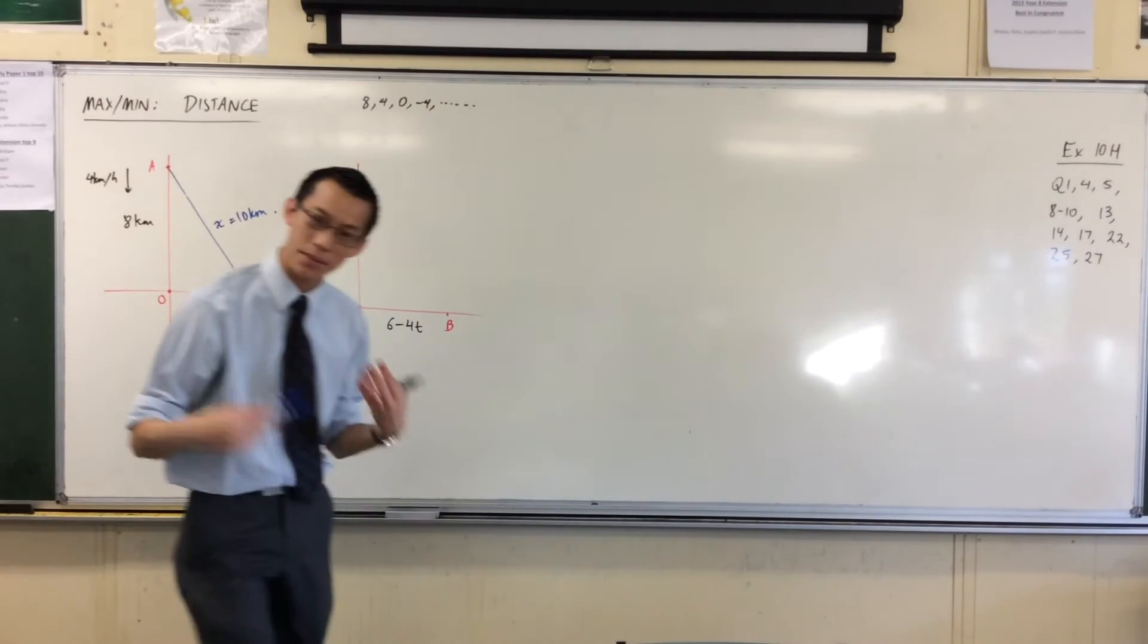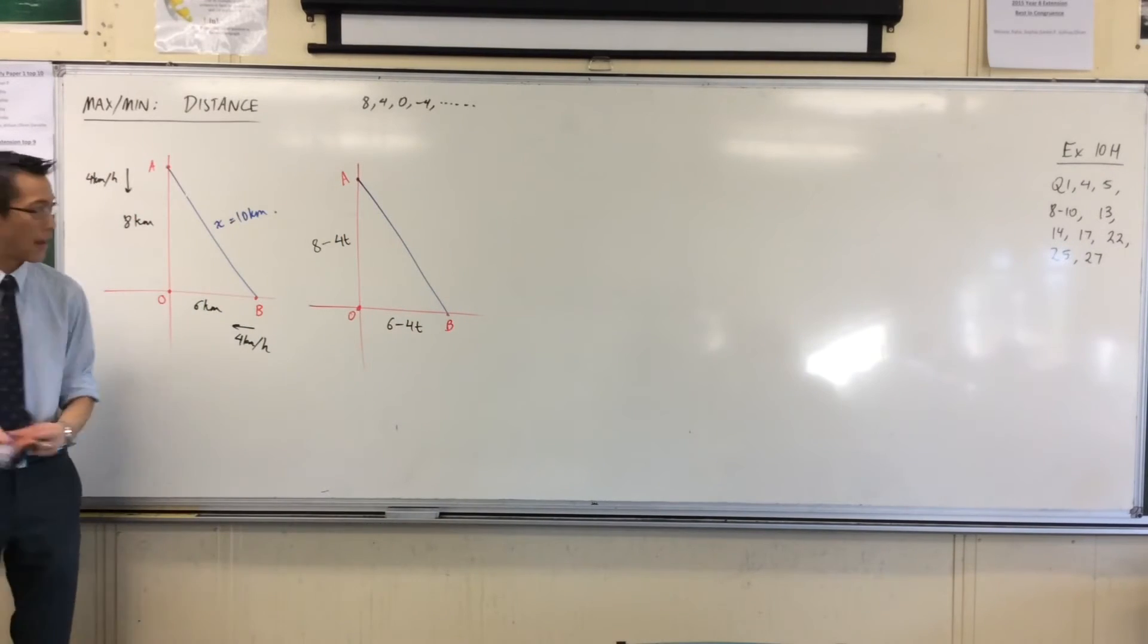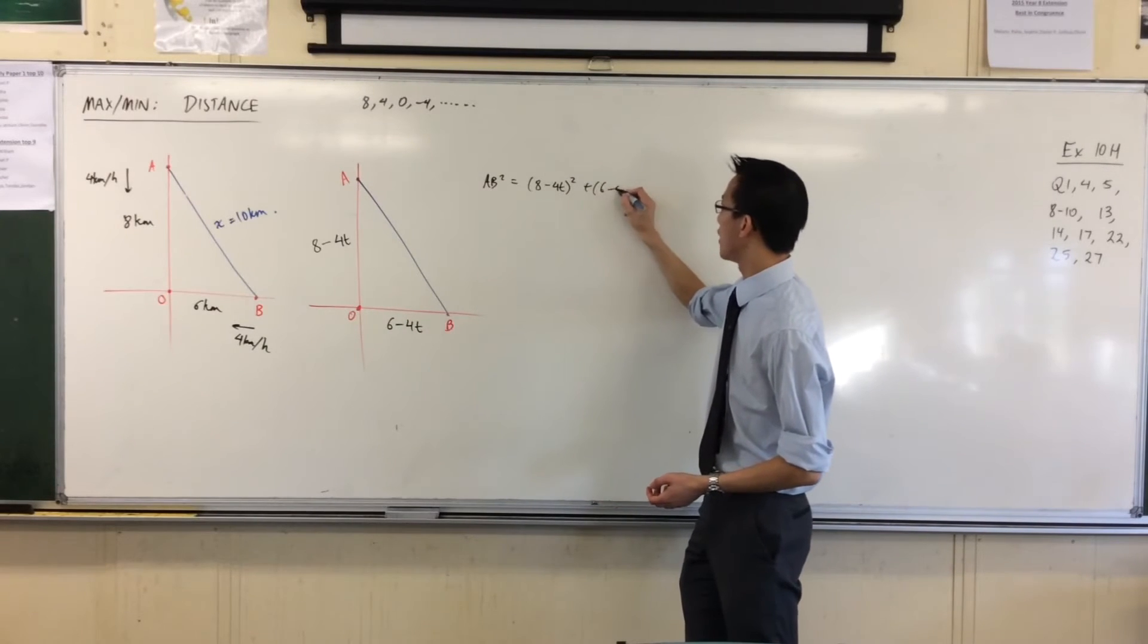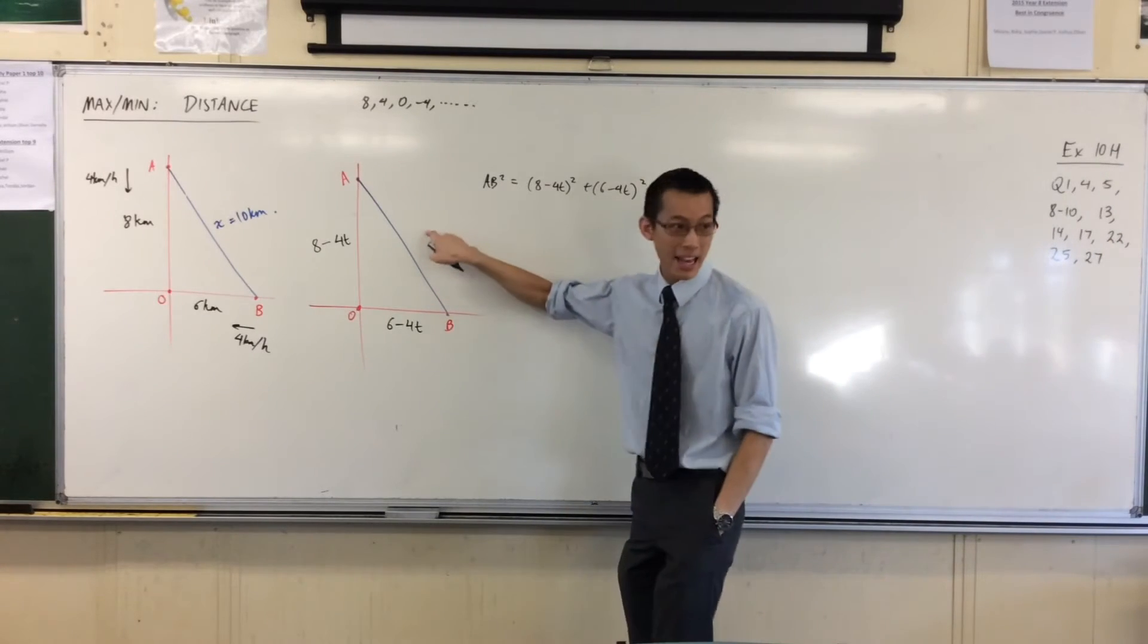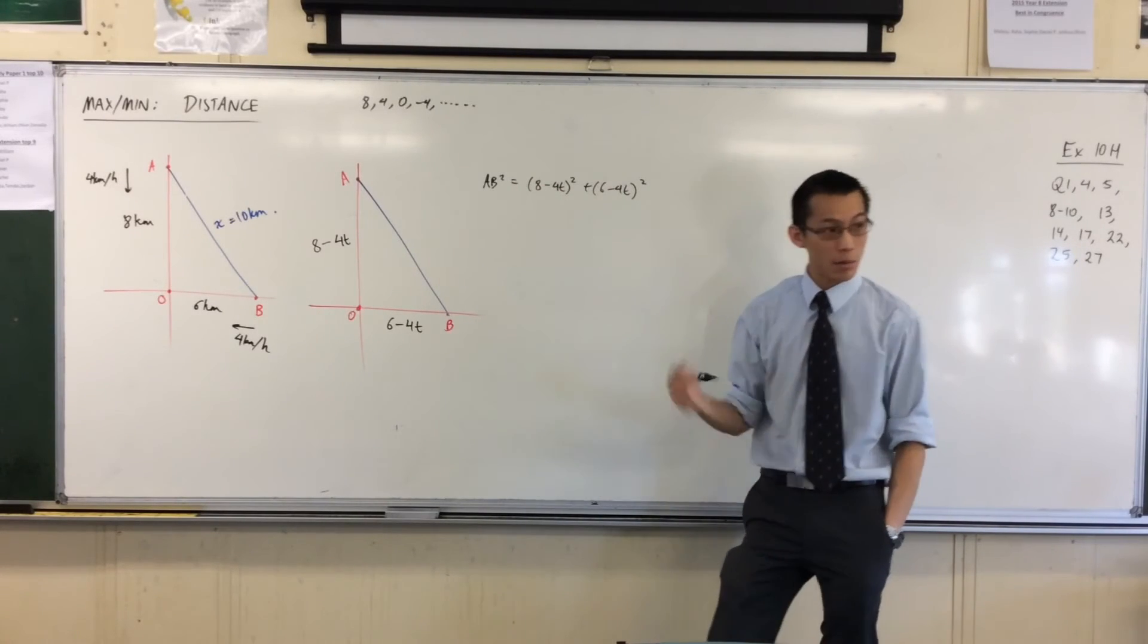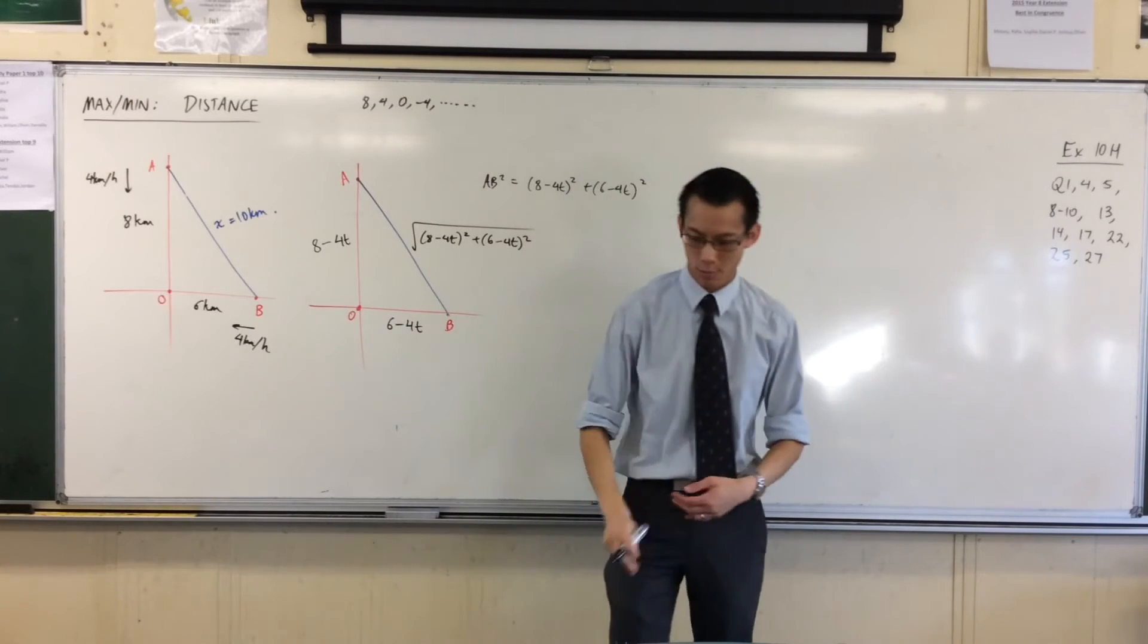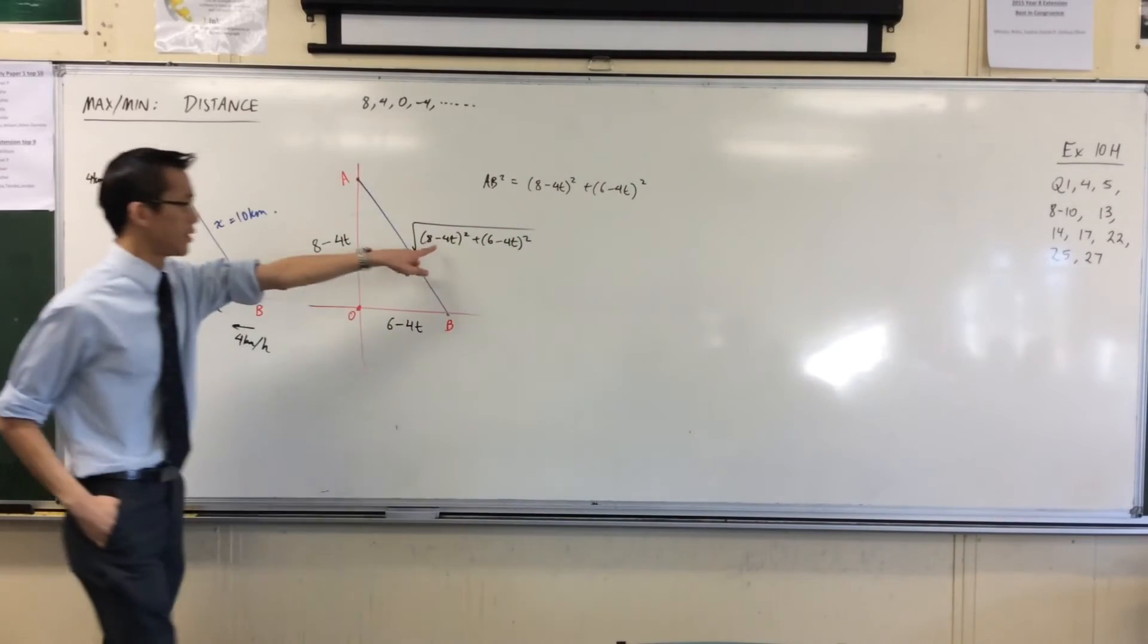I'm going to put my line in there. According to Pythagoras, I would say the square of the hypotenuse is equal to the sum of the squares of the shorter two sides. Ordinarily, therefore, I would say this actual distance is the square root of all of this. In fact, I'm going to go ahead and write that—that is what the distance is: square root of (8-4t)² + (6-4t)². But let's just pause for a second. We have two reasons to pause at this moment.